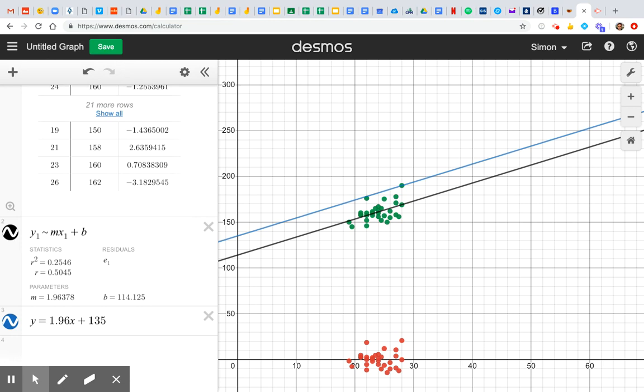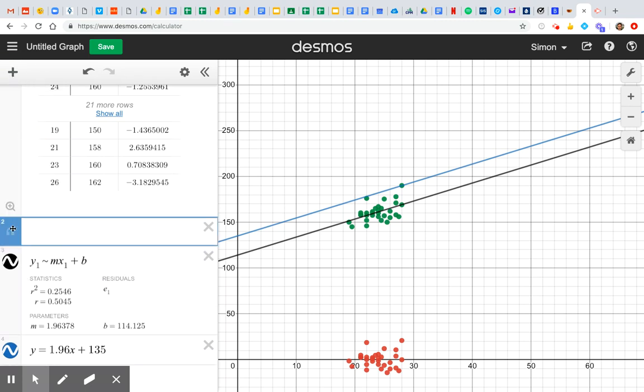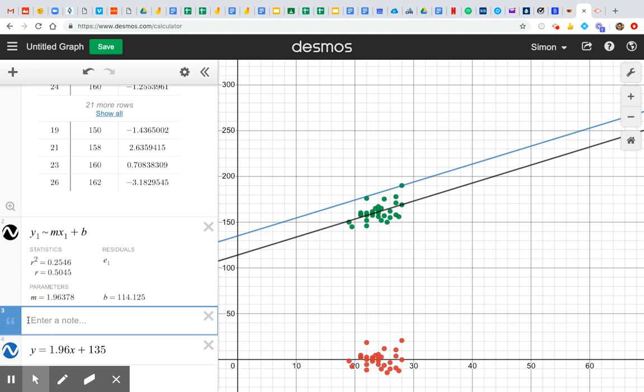And you can actually write notes in here. So I can move this to here and I can write upper bounds. It's upper because it happens to be the one that's above, and I know what that means.